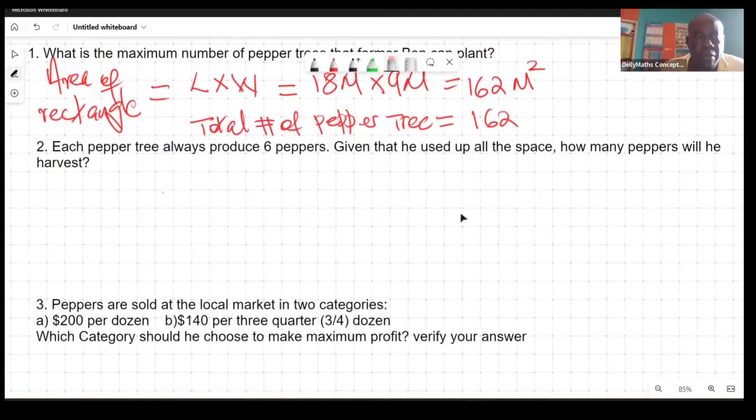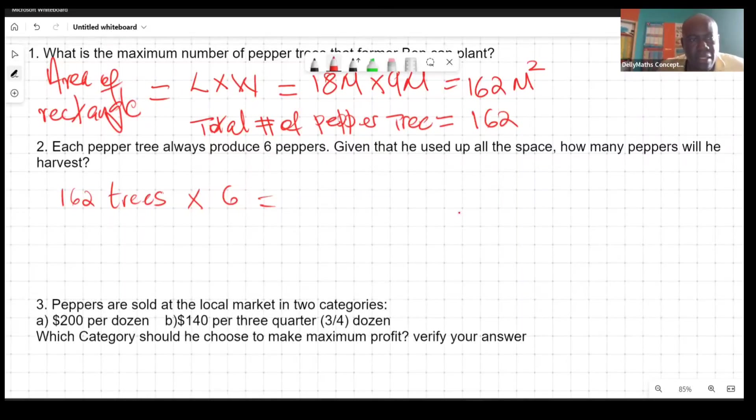Question two says each pepper tree always produces six peppers. Given that he used up all the space, how many peppers will he harvest? We're looking at the fact that we have 162 trees and then each one of these trees will be producing six peppers. So we multiply the six times the number of trees and you're getting 972 peppers.